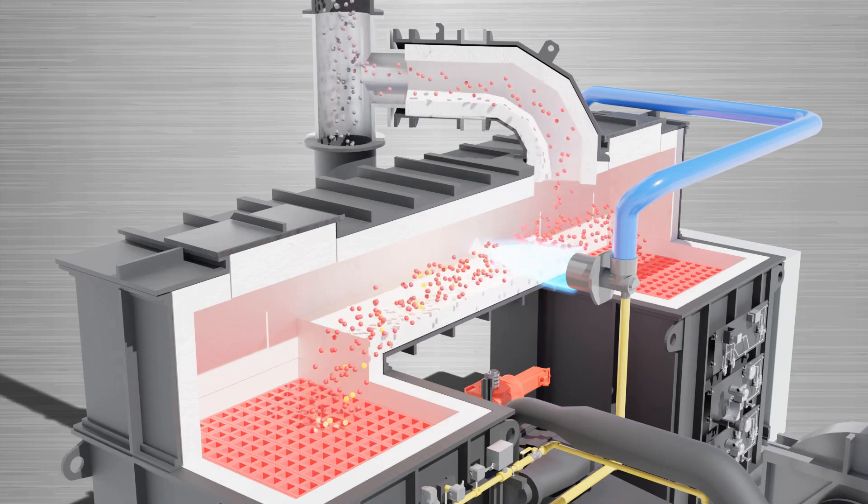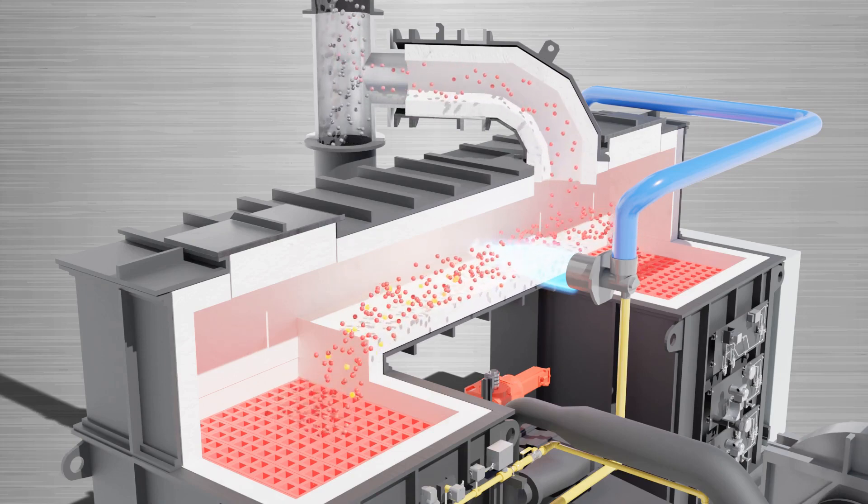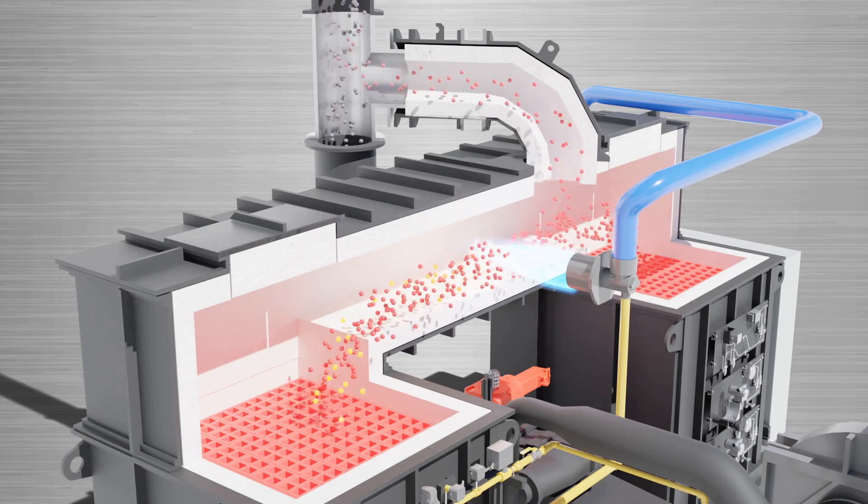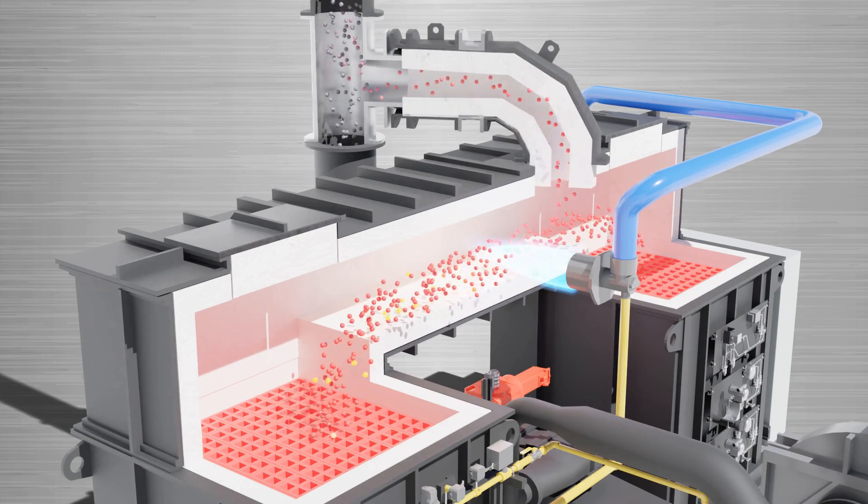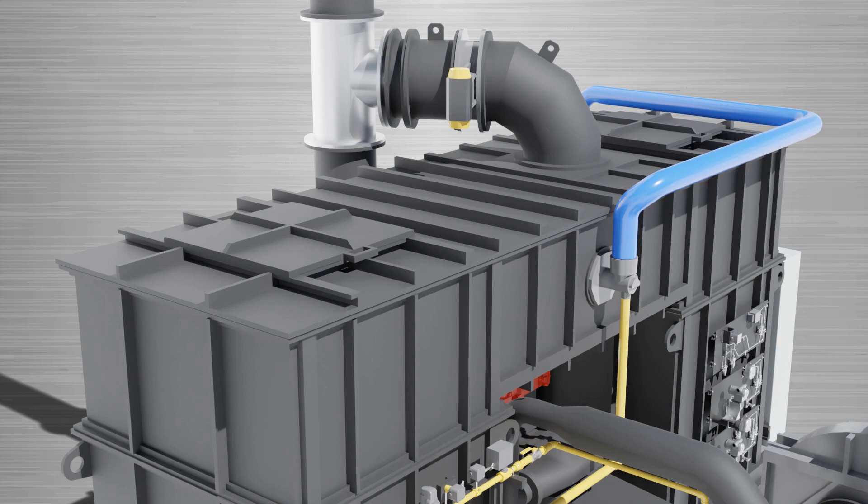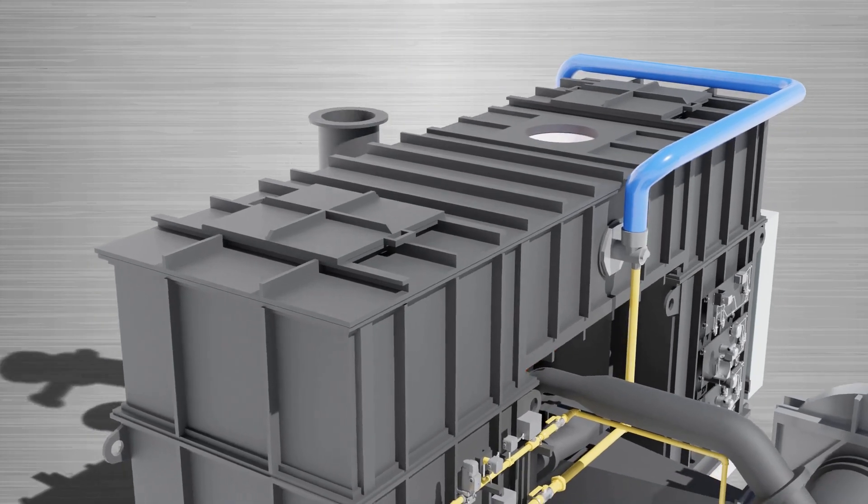The hot gas bypass damper allows a fraction of the hot flow to bypass the recovery chamber. This decreases the overall energy recovery of the system. It allows for safe and stable operation at times when high heat release would otherwise overheat the system.